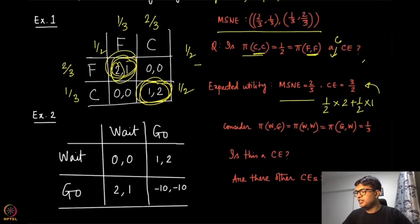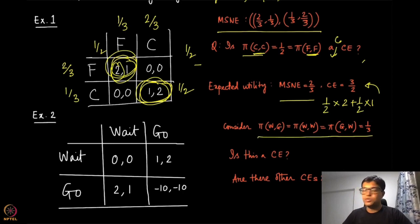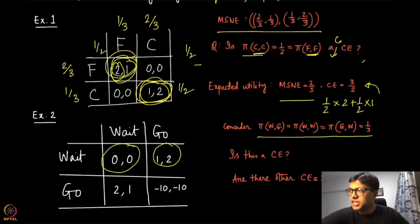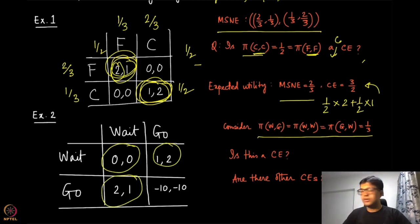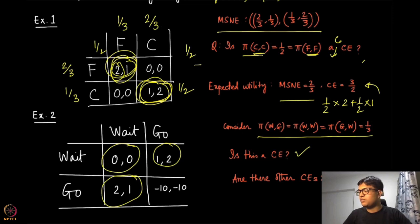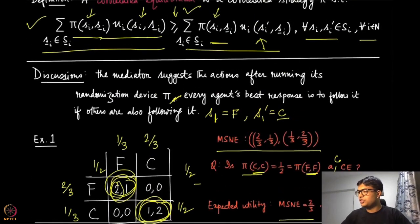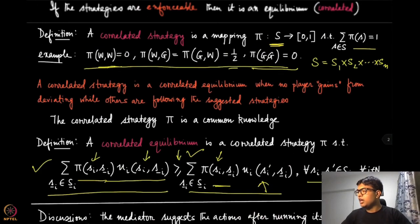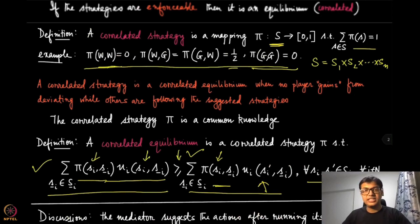Similarly, look at the wait-go traffic game. A correlated strategy putting probability 1/3 each on wait-wait, wait-go, and go-wait is given — check whether this is a correlated equilibrium. Also check the earlier example putting 1/2 on wait-go and 1/2 on go-wait, and zero on the other two cases, to determine whether that is a correlated equilibrium.